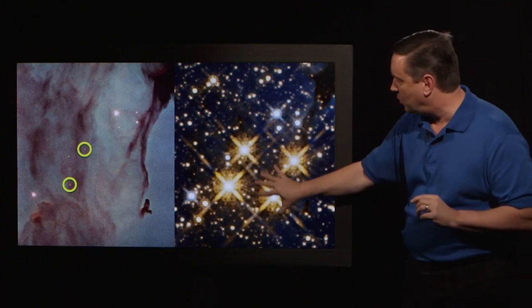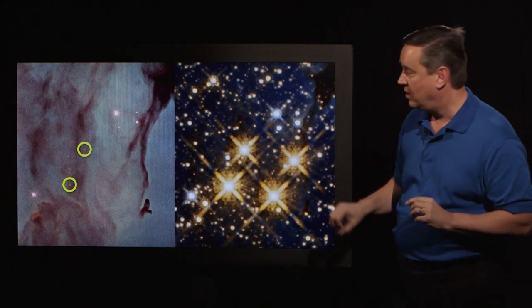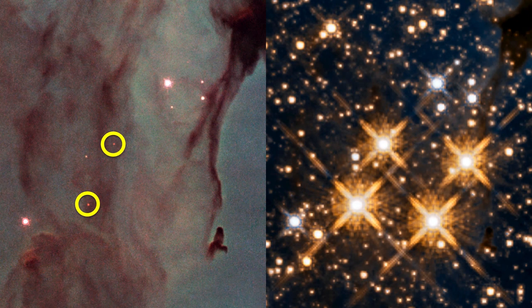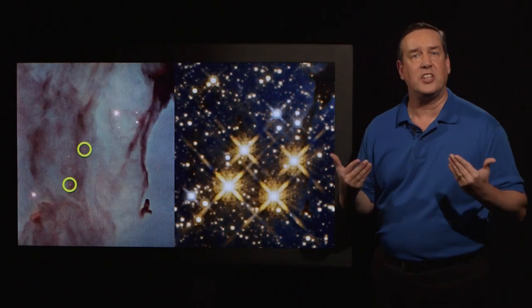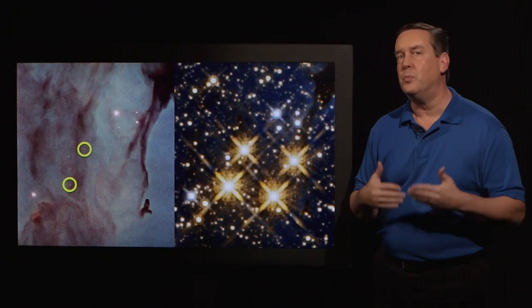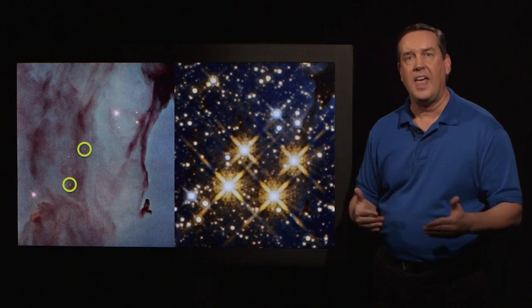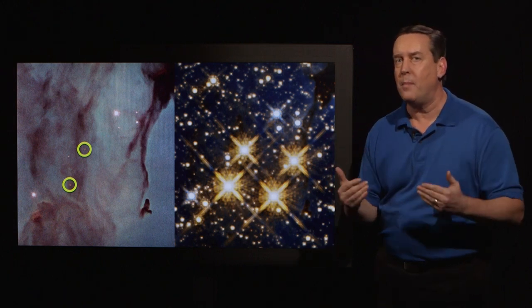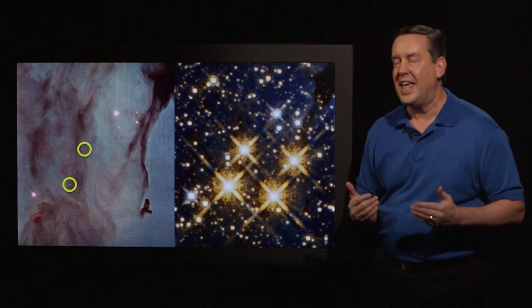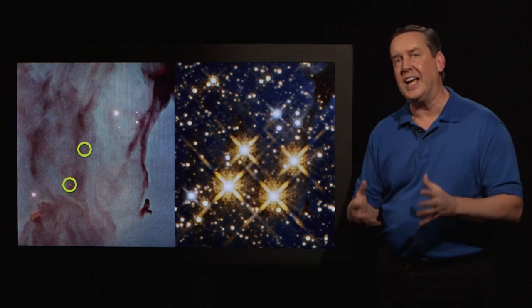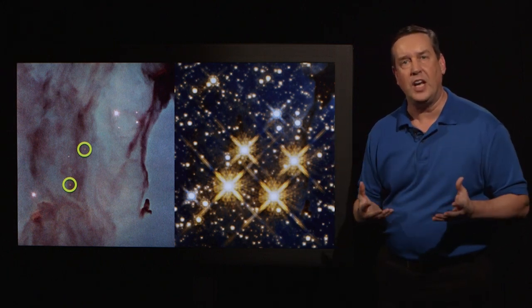These must be very low mass stars, because while a star like the sun emits most of its light in visible light, the very small stars — the lower mass stars — emit most of their light in infrared radiation.